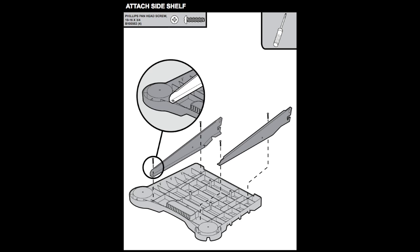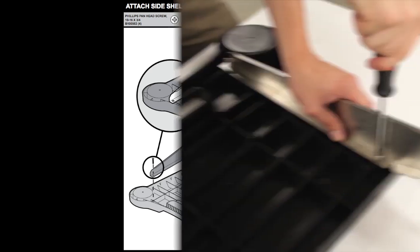Attach the two supports to the bottom of the shelf. Tighten one, but leave the other a little loose.